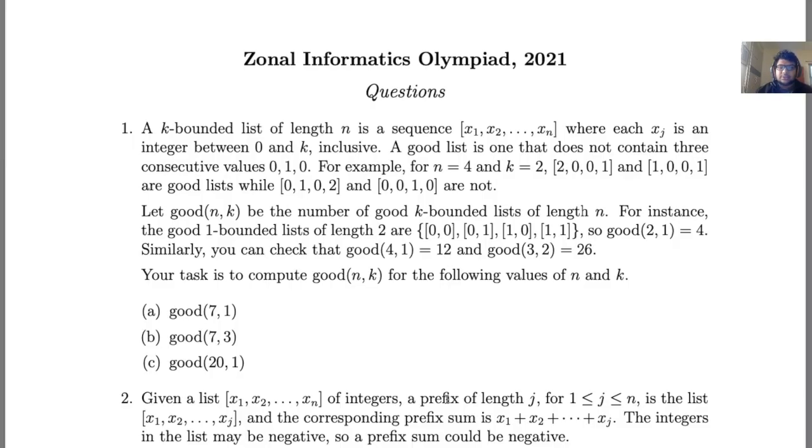However, 0, 1, 0, 2 is not a good list because 0, 1, 0 is there at the beginning. And similarly, 0, 0, 1, 0 is also not a good list because 0, 1, 0 is there at the end.